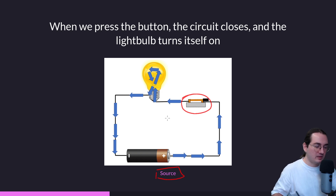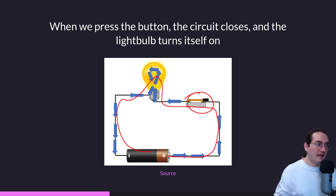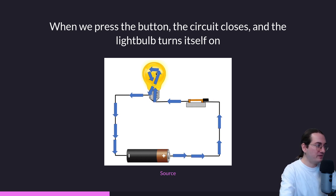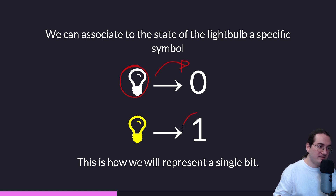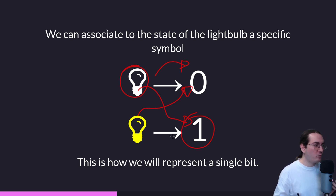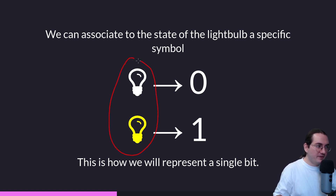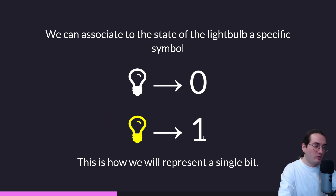If we press the switch, the physical circuit closes, electricity can flow, and the light bulb turns on. We can associate the state of the light bulb to a specific symbol: if the light bulb is off it represents zero; if it is on it represents one. We could also map it the opposite way — it doesn't matter which way, as long as we have one consistent mapping between the physical phenomenon and the digital symbol.